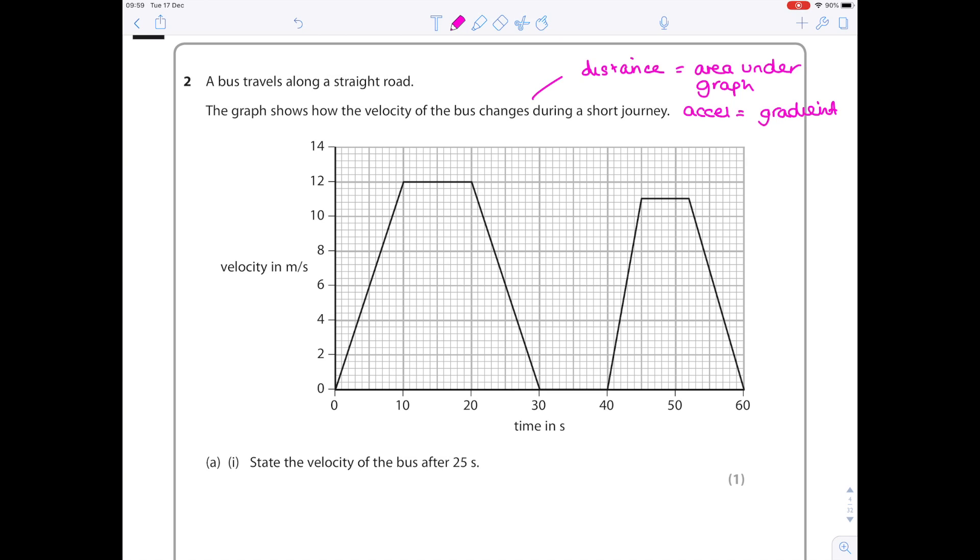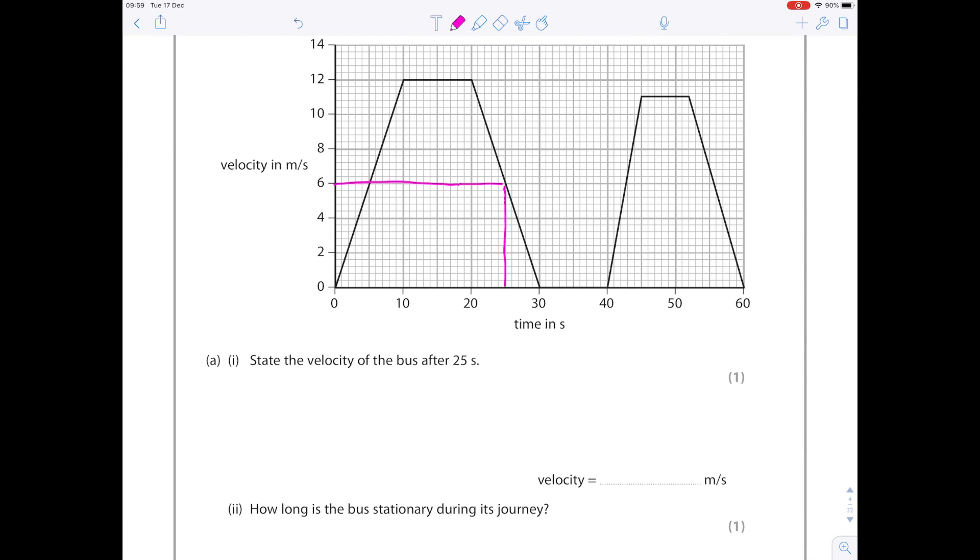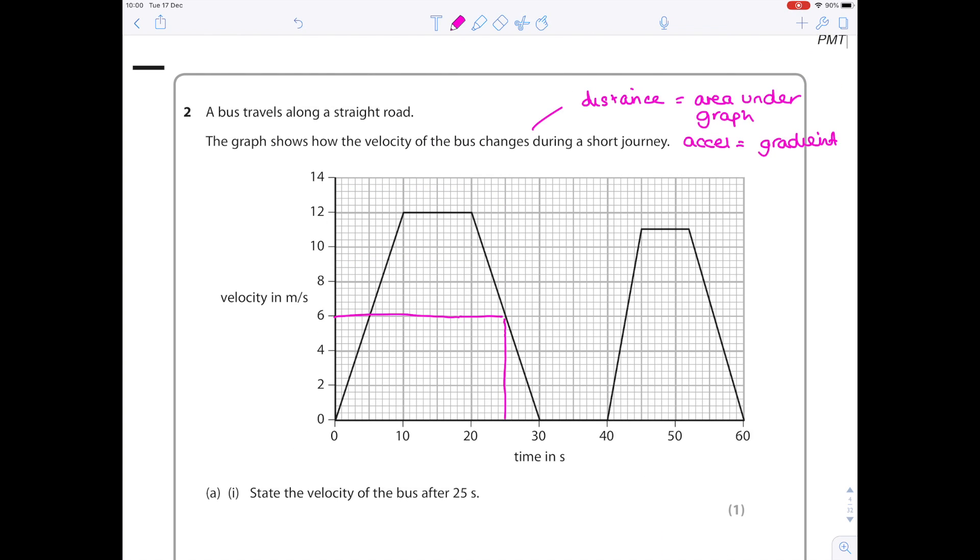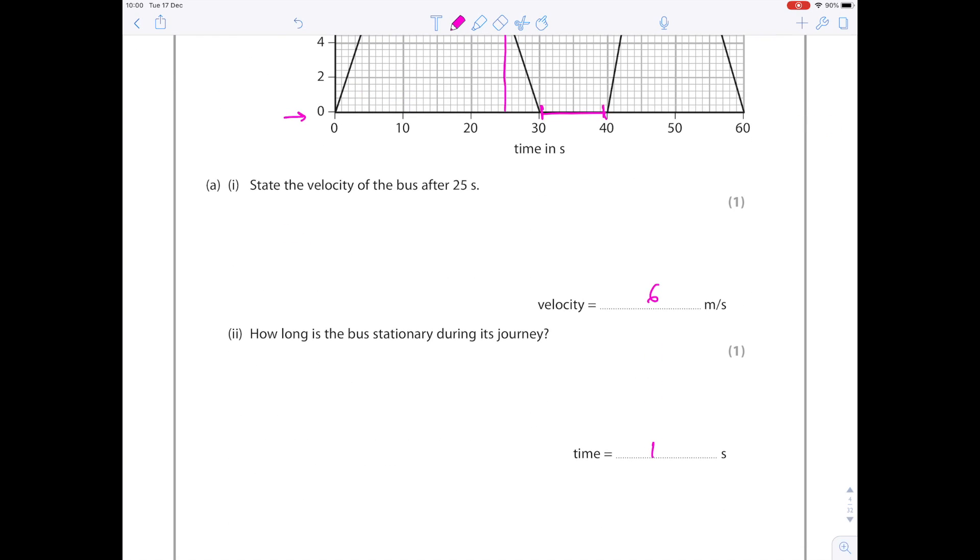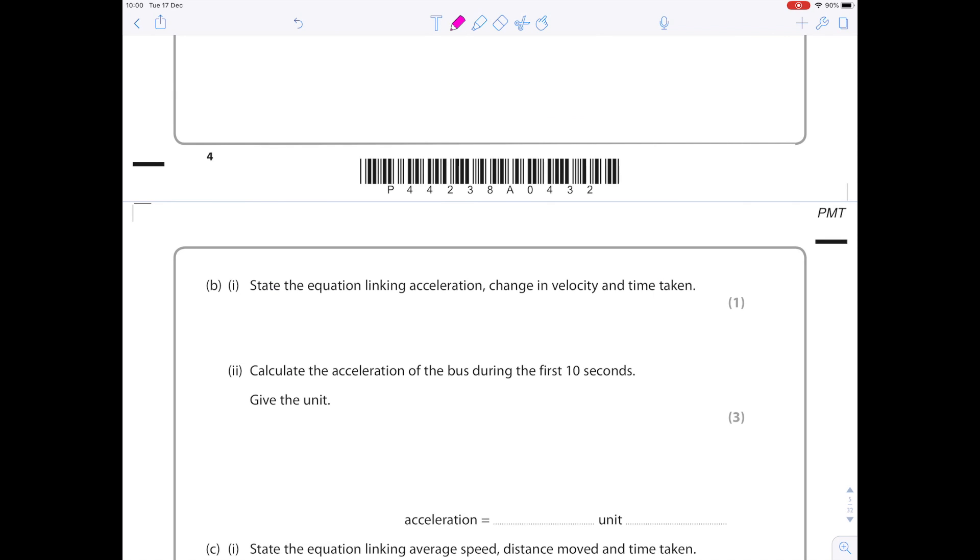State the velocity of the bus after 25 seconds. That's six meters per second. How long is the bus stationary during its journey? Stationary means it's traveling at zero meters per second, so that's this portion of the graph, so that's 10 seconds.